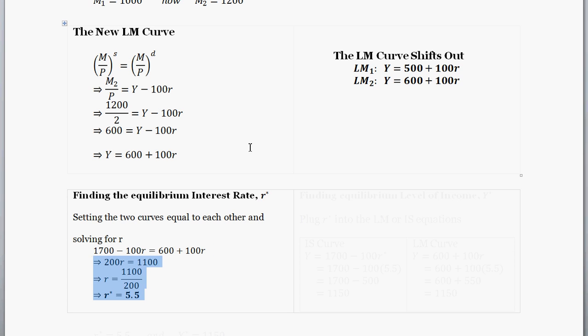Now, simplifying and solving for R, we find that the new equilibrium interest rate, R star, is 5.5.